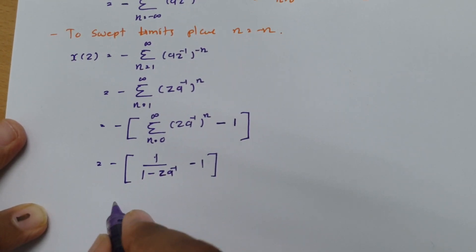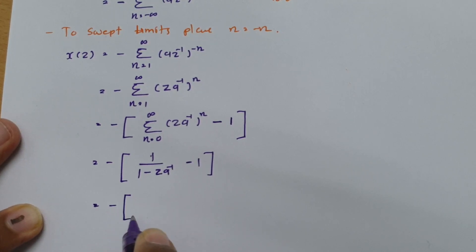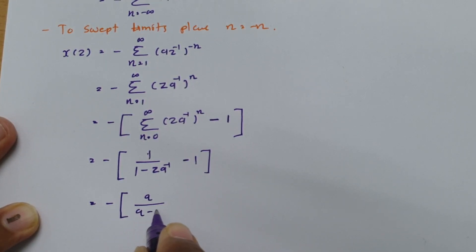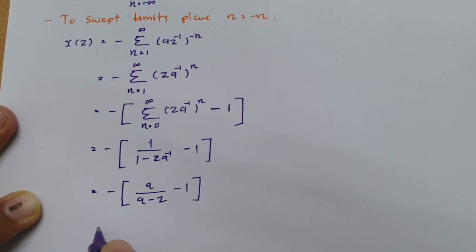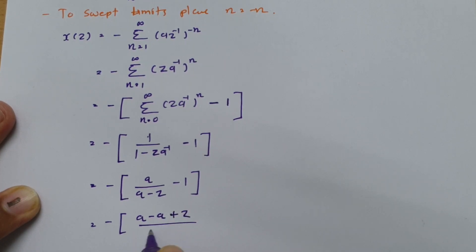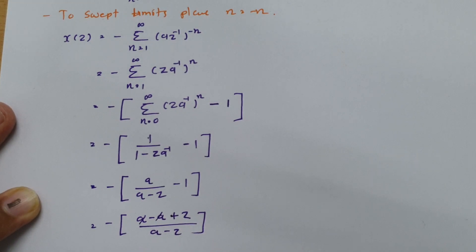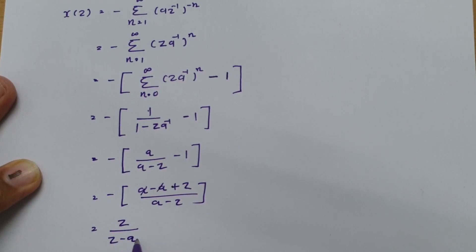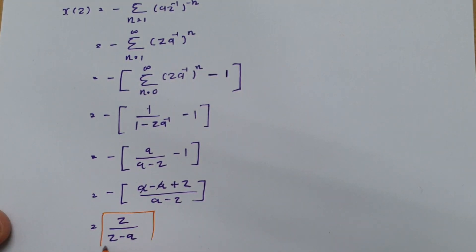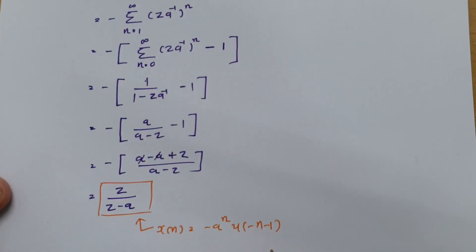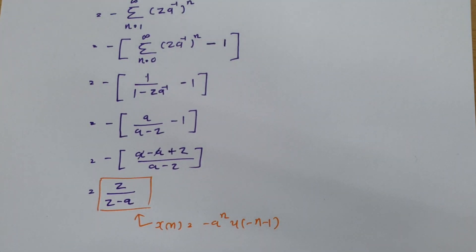Simplifying: za⁻¹ = z/a, so 1/(1 - z/a) = a/(a - z). Then: -[a/(a-z) - 1] = -[(a - (a-z))/(a-z)] = -[z/(a-z)] = z/(z-a). Therefore, the Z-transform of x(n) = -a^n · u(-n-1) is z/(z-a).